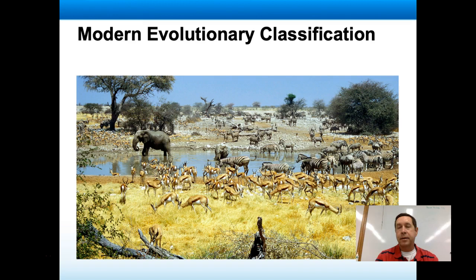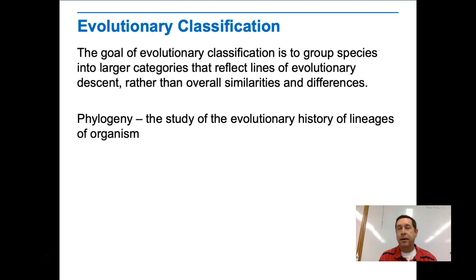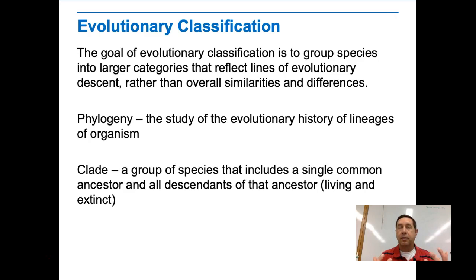In this video we're going to talk about how classification has changed with these new modern classification systems based on phylogeny, based on evolutionary history. Evolutionary classification is grouping species into categories that show evolutionary descent, a relationship based on common ancestors rather than just looking at physical similarities and differences. Phylogeny is the study of evolutionary histories of lineages of organisms.